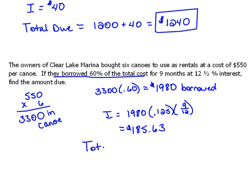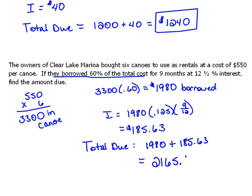Now for the total due, that would be how much we borrowed — $1,980 — plus the interest of $185.63, for a grand total of $2,165.63.